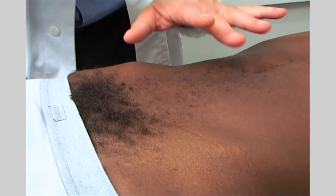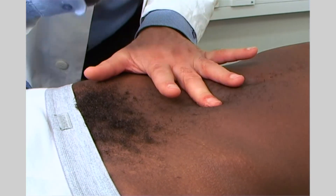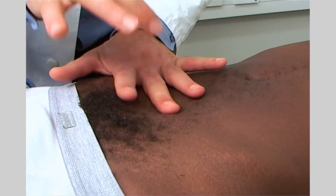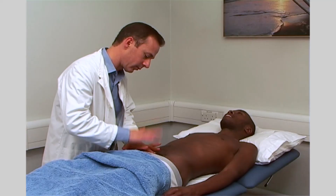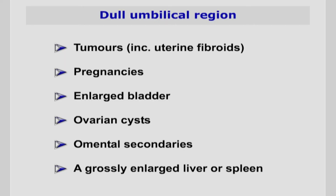The bladder is also percussed from top down, starting from above the umbilicus and progressing towards the pelvic cavity. Remember that if you detect dullness in an area where you would expect the resonance of bowel sounds, you need to investigate the different possibilities of an abdominal mass. If the middle of the abdomen is not resonant, then think of the possibilities of tumours, pregnancies, enlarged bladder, ovarian cysts, omental secondaries, or a grossly enlarged liver or spleen.